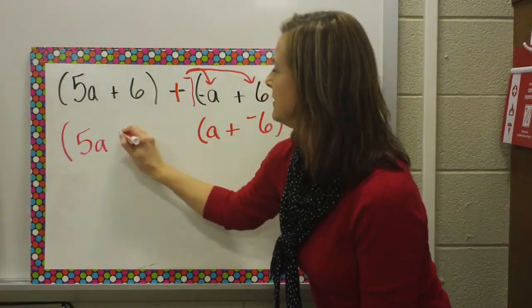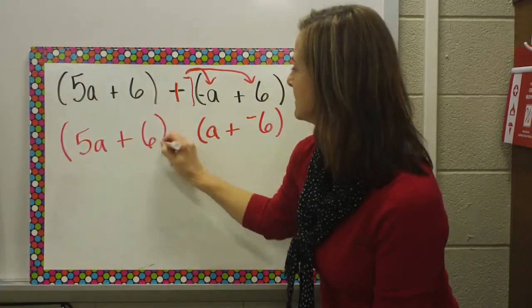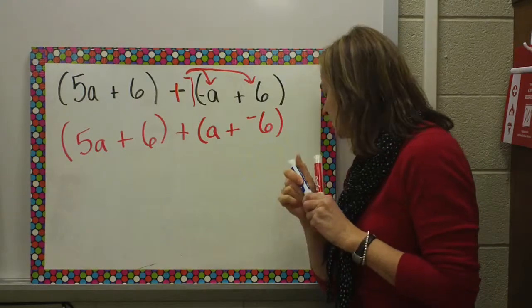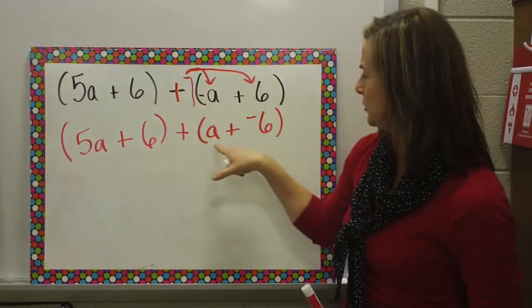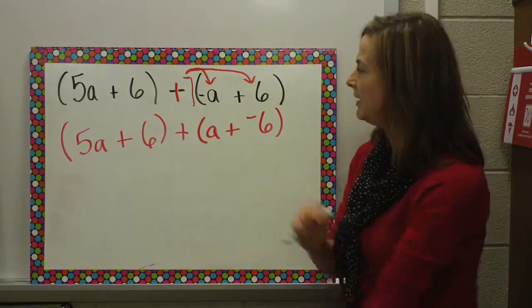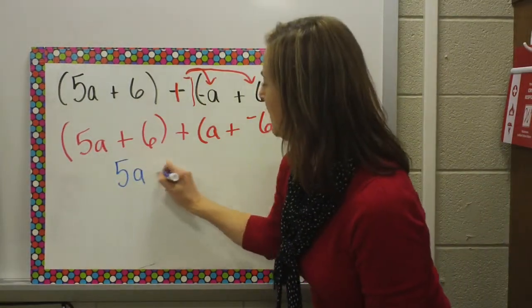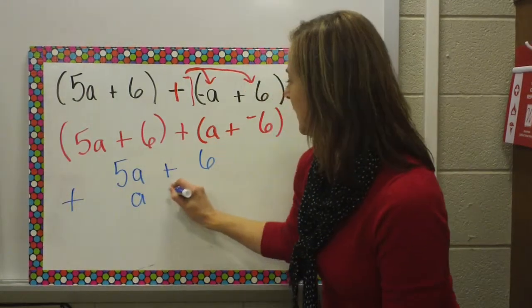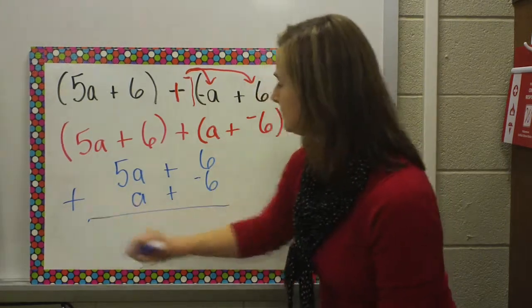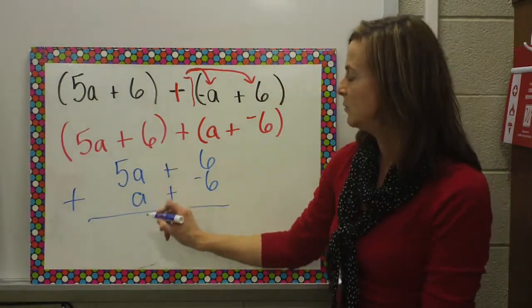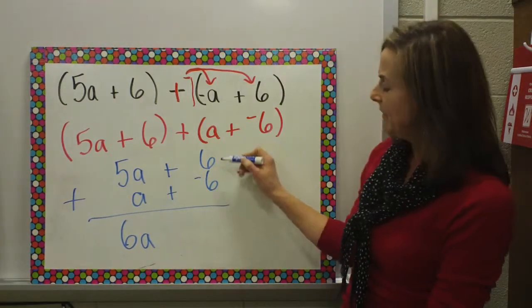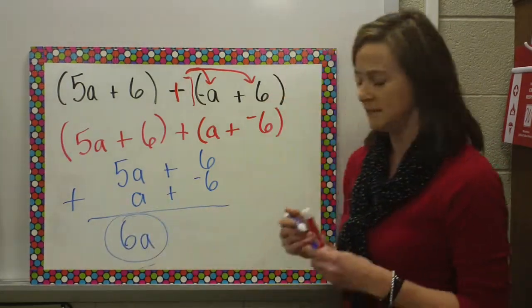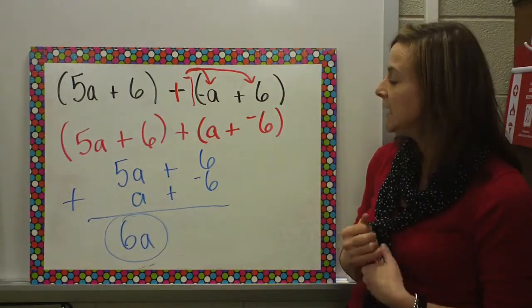So now my new problem looks like this: five A and six plus A and a negative six. The next step says to make sure they're in order — I've got my variable term first and then my constant in both, so I don't have to worry about that. So then I line them up: five A and six, plus A and a negative six. Combining my like terms, I have five A's and one A, that means I have six A's. And then I have six minus six, which means I would have nothing — no constant. My final answer is simply six A.